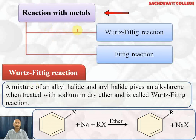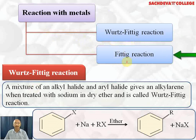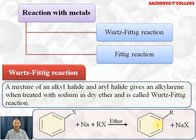Reactions with metals: first, the Wurtz-Fittig reaction. In the Wurtz-Fittig reaction, one aryl halide and one alkyl halide are reacted with two moles of sodium metal in dry ether as solvent. Two NaX molecules are removed and the alkyl group attaches to the benzene ring to give alkylbenzene. For example, chlorobenzene with two moles of sodium and CH₃Cl gives toluene. So chlorobenzene can be converted to toluene using the Wurtz-Fittig reaction.